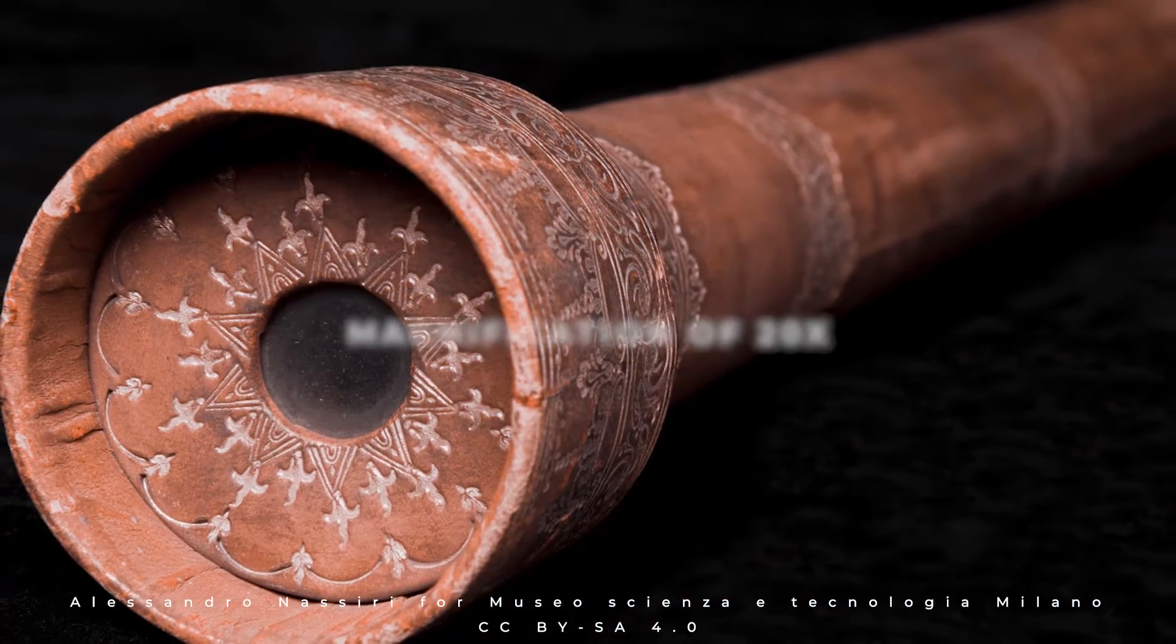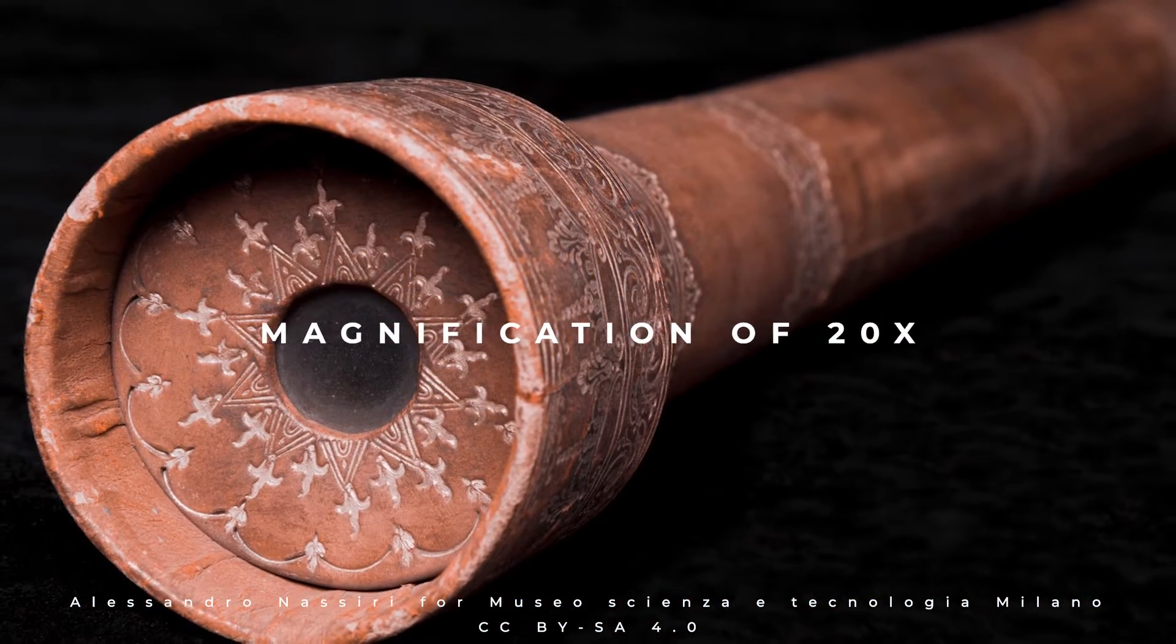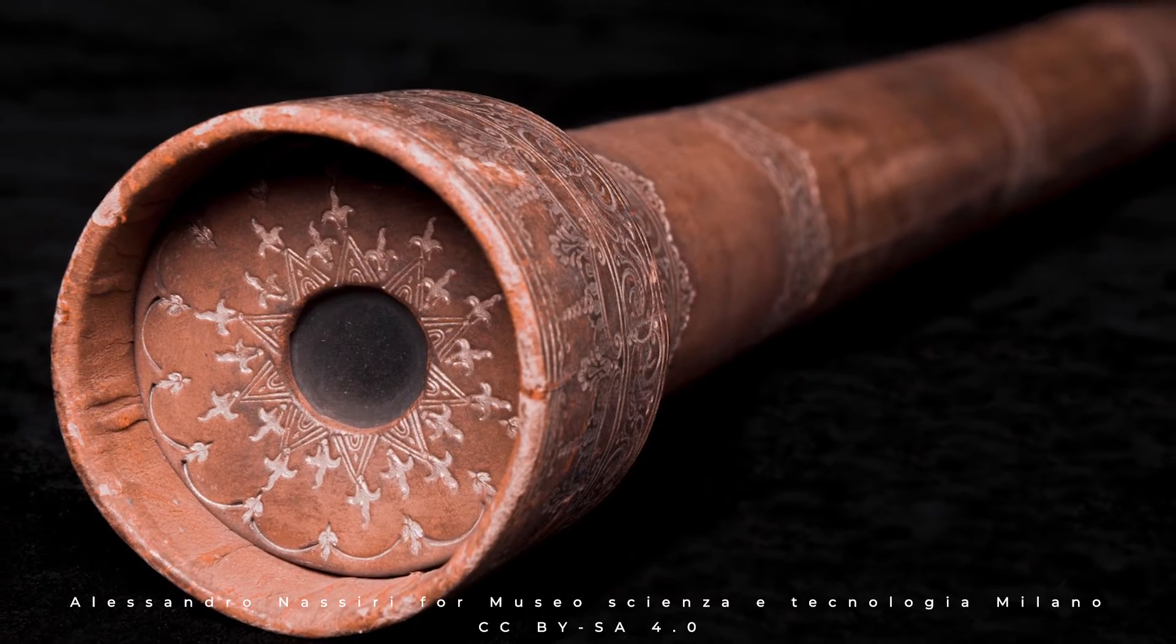Galileo's telescope had a magnification of 20 times, and he used it to make some of the most important discoveries in astronomy.